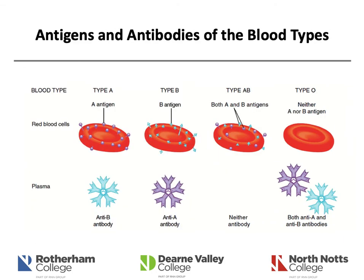This is an overview of all the different blood types, showing the types of antigens that red blood cells do or do not have, and what types of antibodies are or are not contained within the plasma for each blood type.